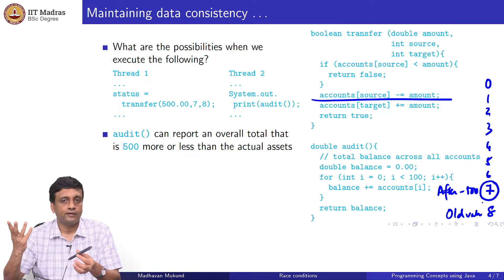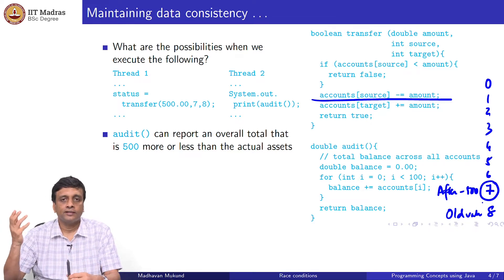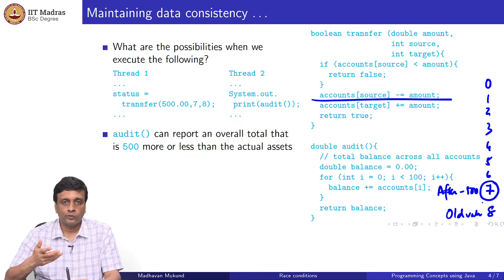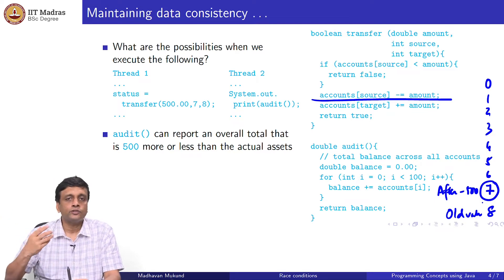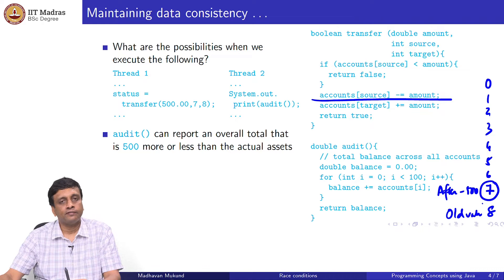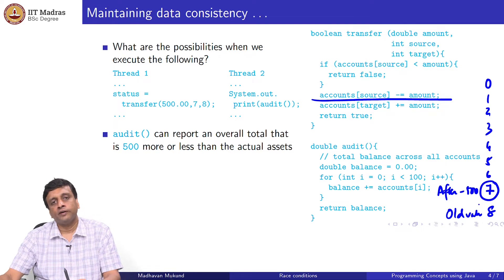As a result, the audit sees 500 less in account 7. But at this point, because the transfer is not completed, when it goes on to 8, I get the old value. I have the value of account number 8 before the transfer has happened. Net, I have lost this 500 as far as the audit is concerned, because the 500 is gone from 7 but not yet reached 8. So it could be 500 less.